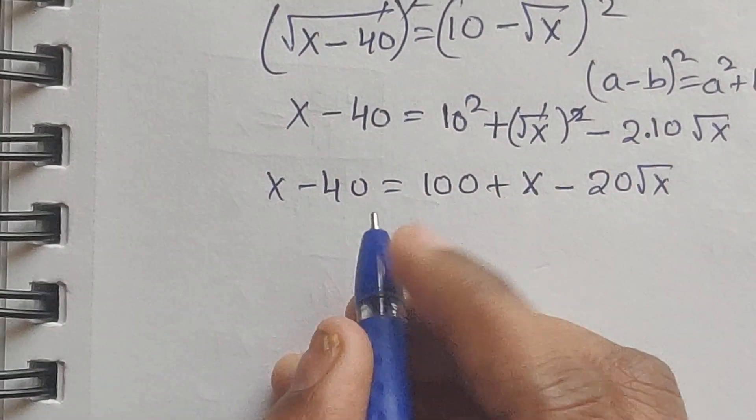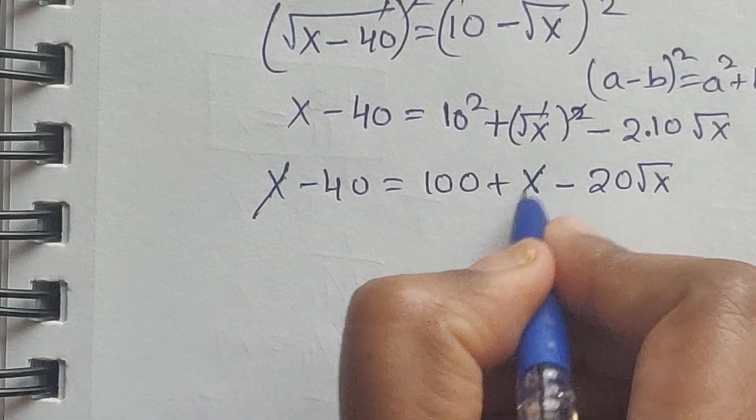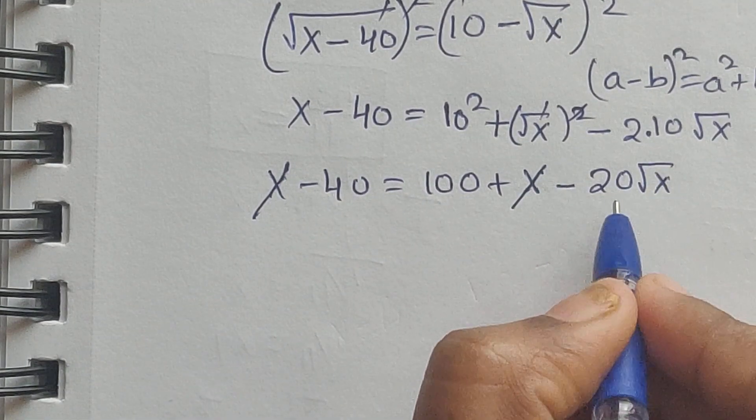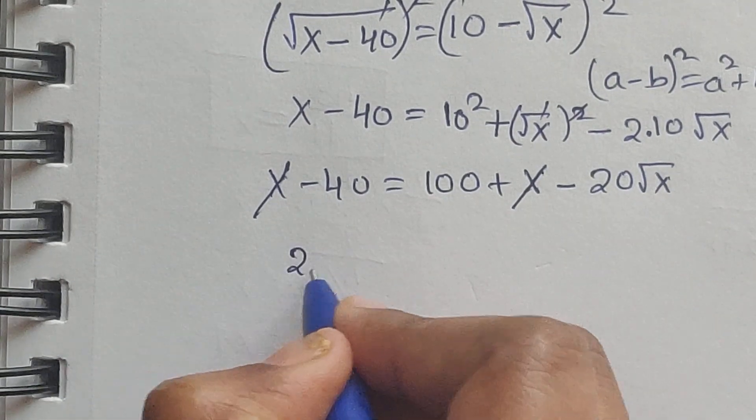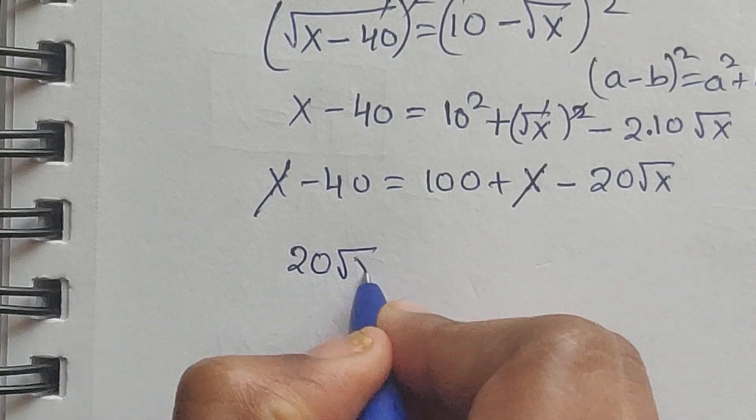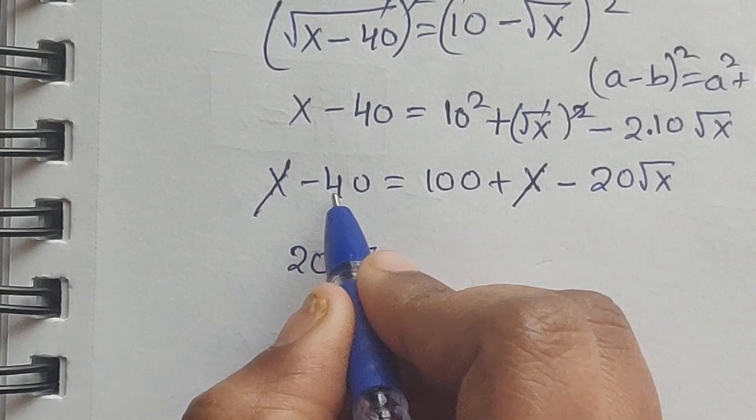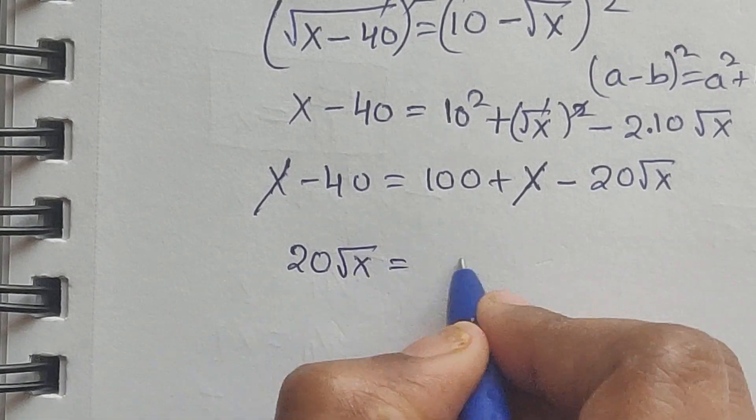So now here x x get cancelled and I am writing this 20 square root of x to the left side, so it will be plus square root of x equal to the right side.